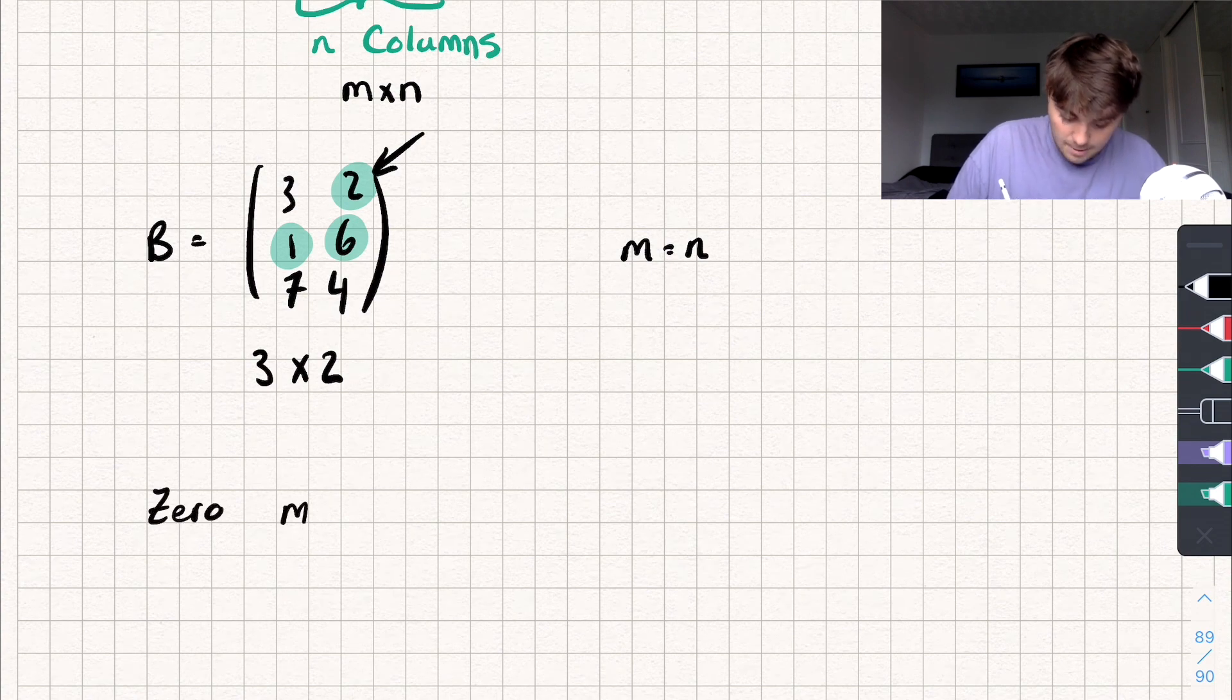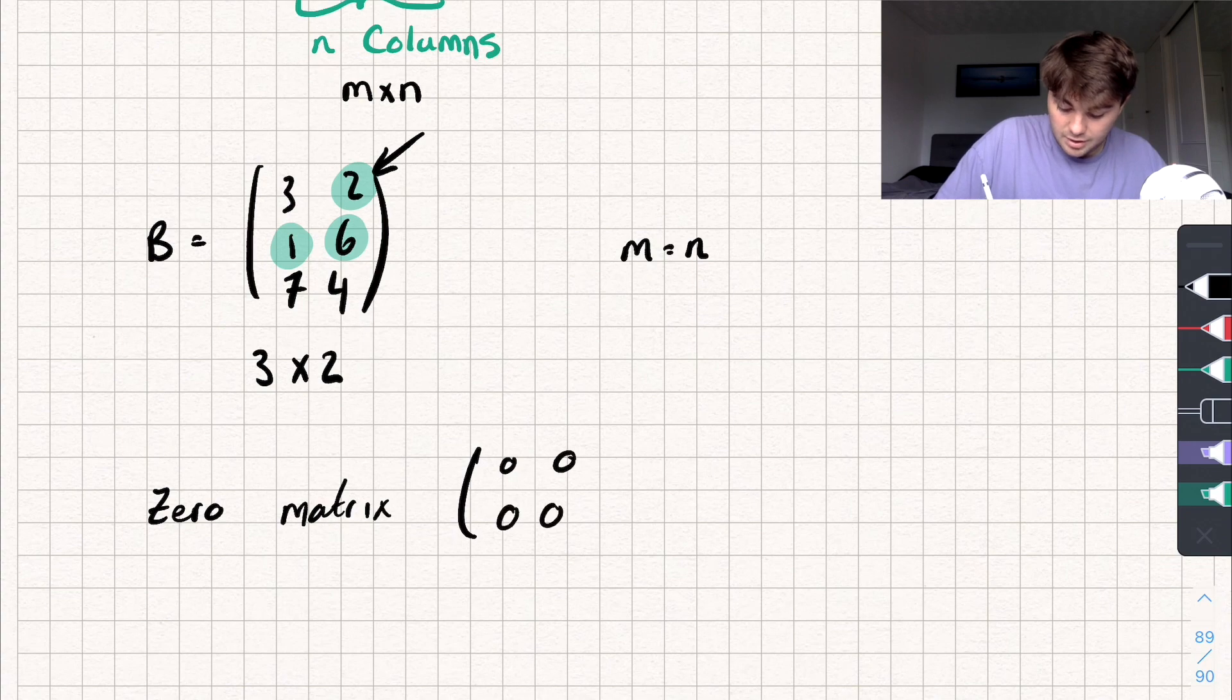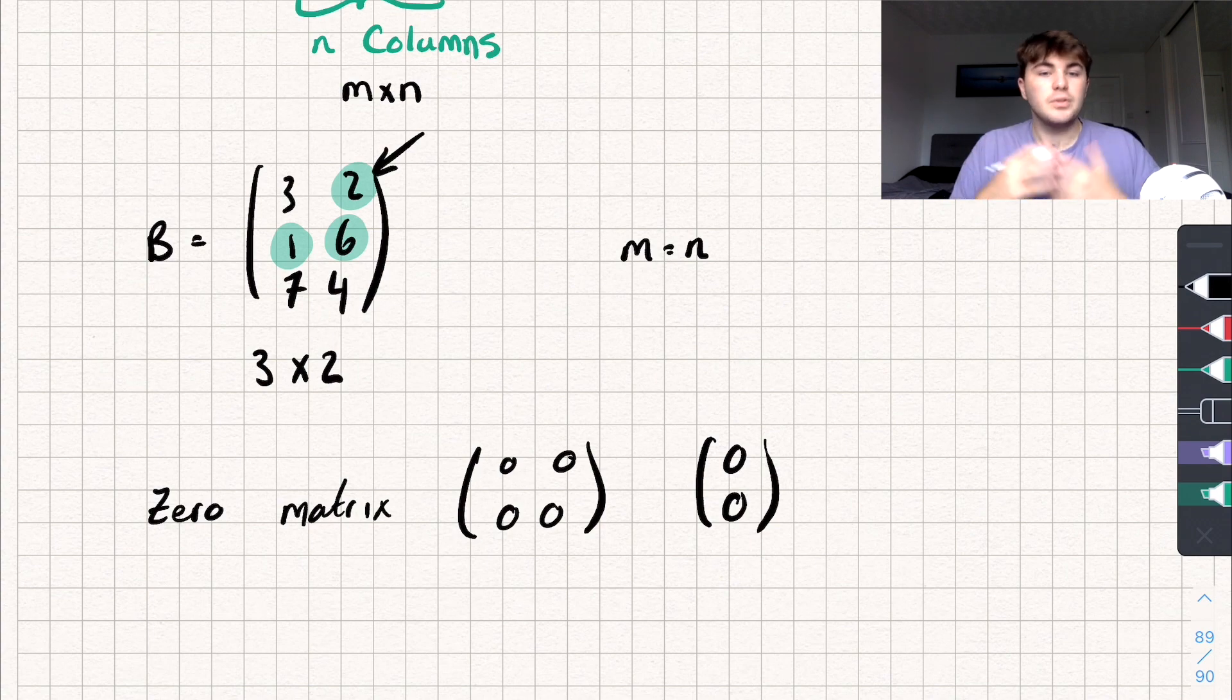And if every element is equal to zero, we have what's called a zero matrix. So the zero matrix would maybe be, we could have one that looks like this. So zero, zero, zero, zero, or I don't know, just zero, zero. It doesn't matter what the dimensions are, but if every element is zero, it's zero matrix.